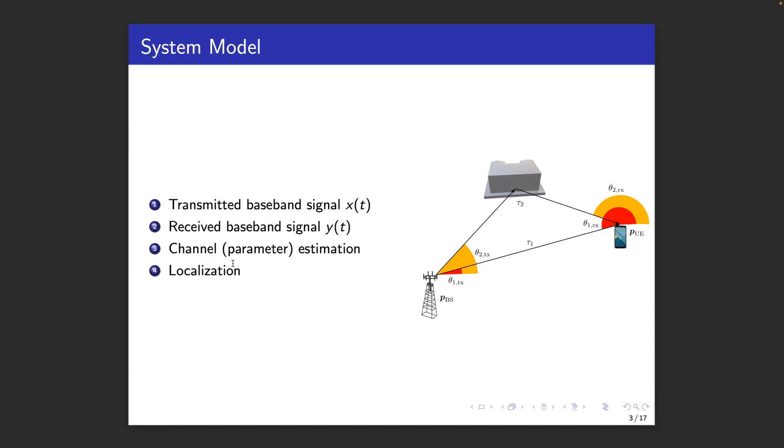The receiver, the UE, estimates the multipath delays, angles of arrival, angles of departure. These are then used for localizing the user.